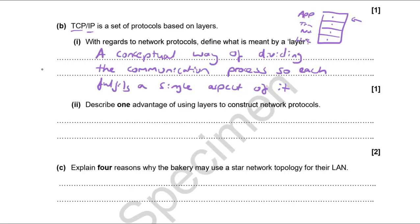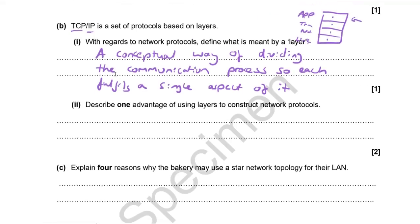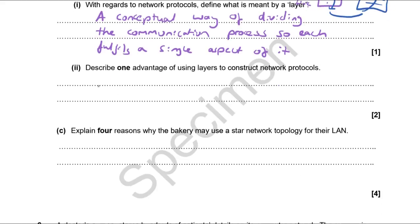A layer is a conceptual way of dividing the communication process so that each fulfills a single aspect of transmission. Each layer is self-contained and well-defined. One advantage of using layers is that one layer can be changed without affecting the other protocols. For example, if you're programming an alternative to TCP at the transport layer, the other layers don't need to know or care about the implementational details.